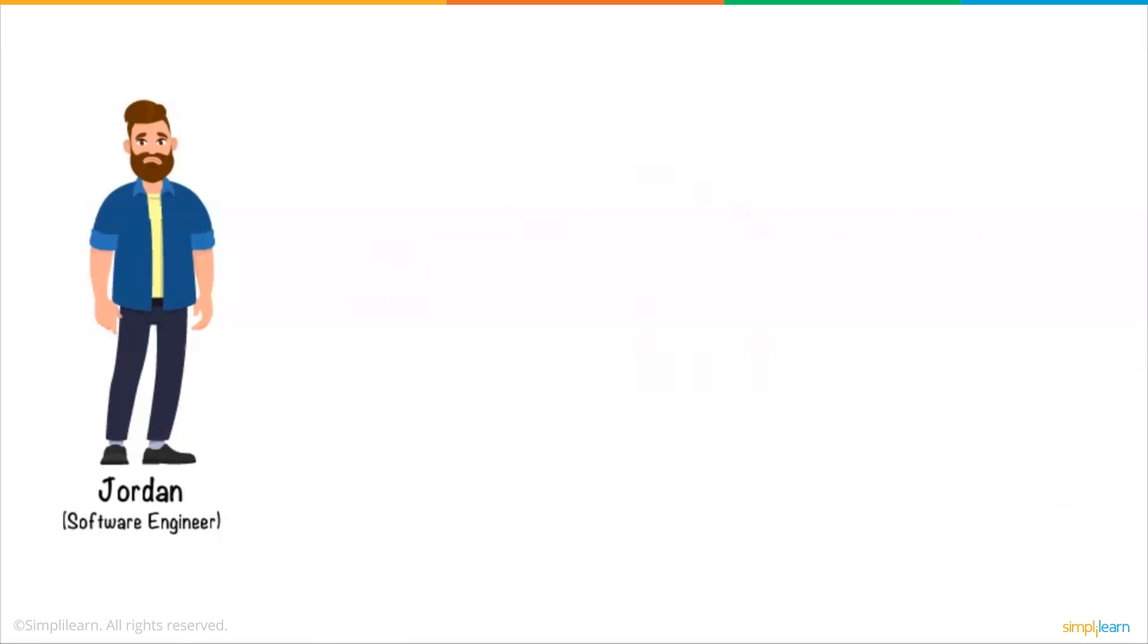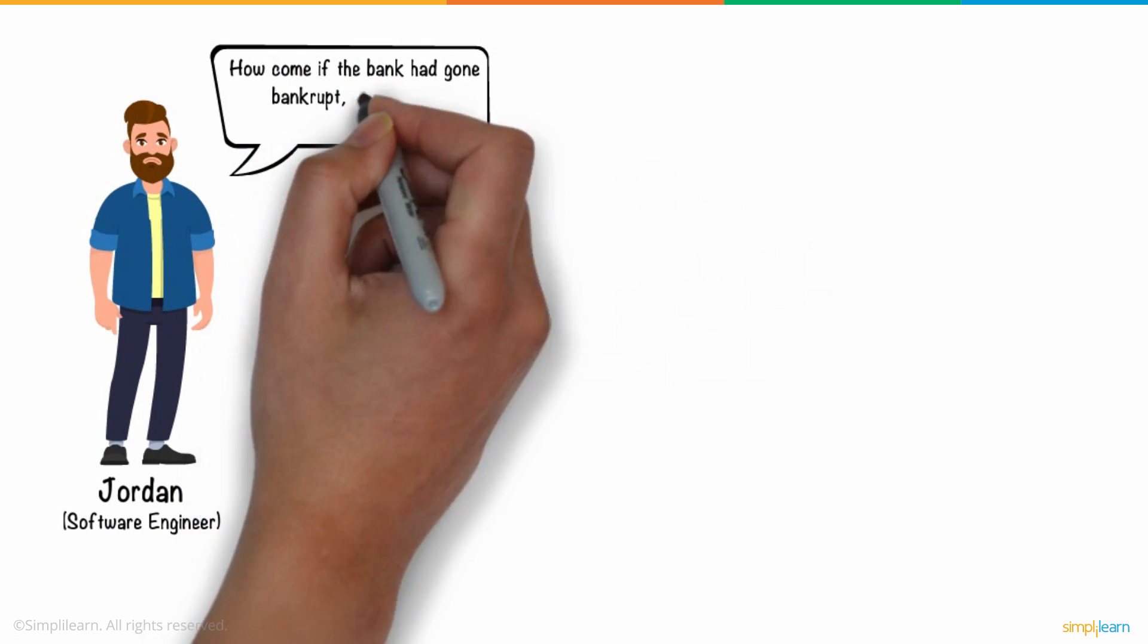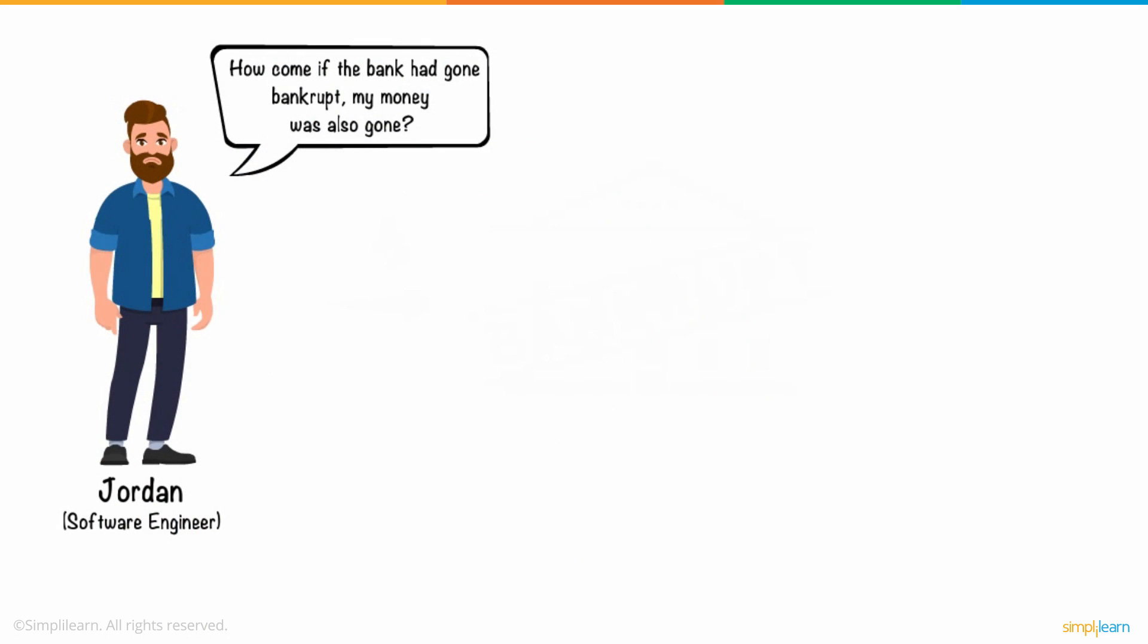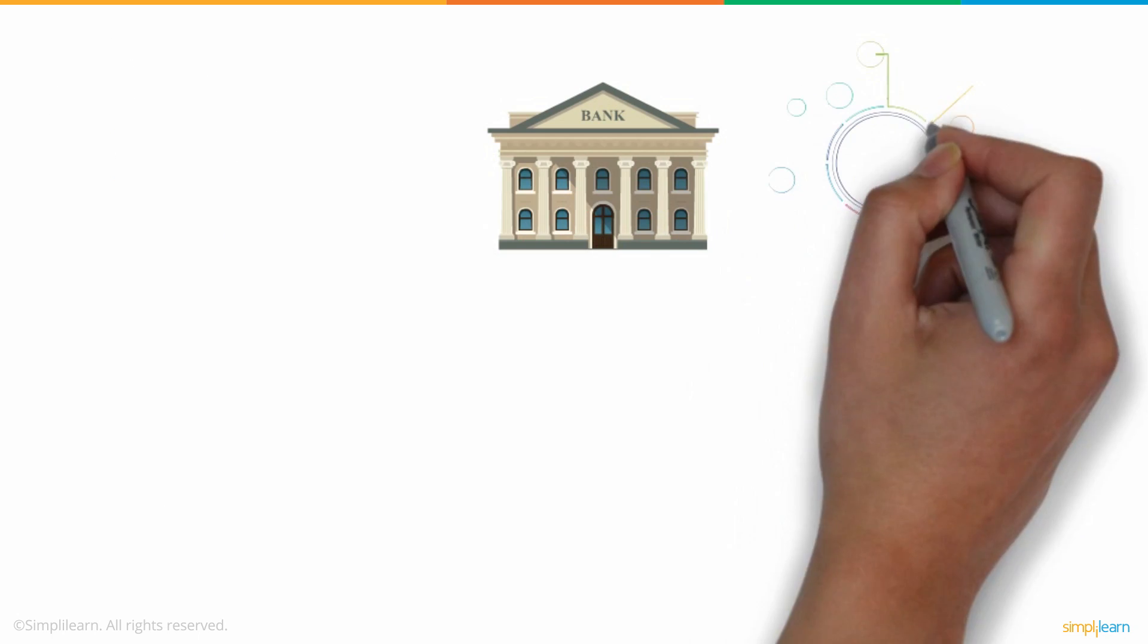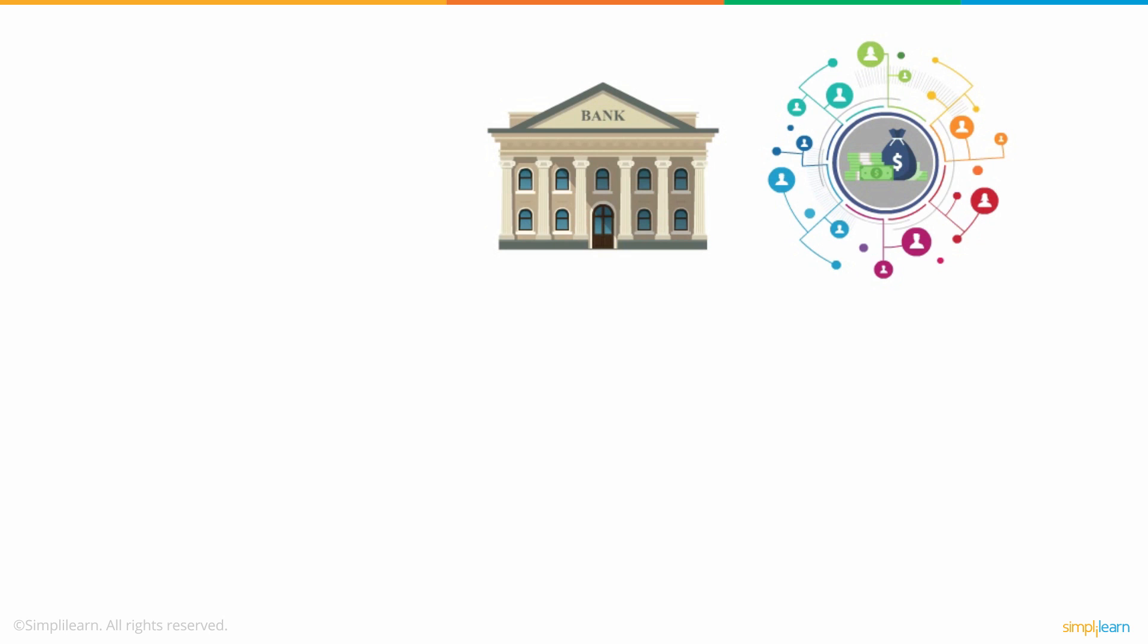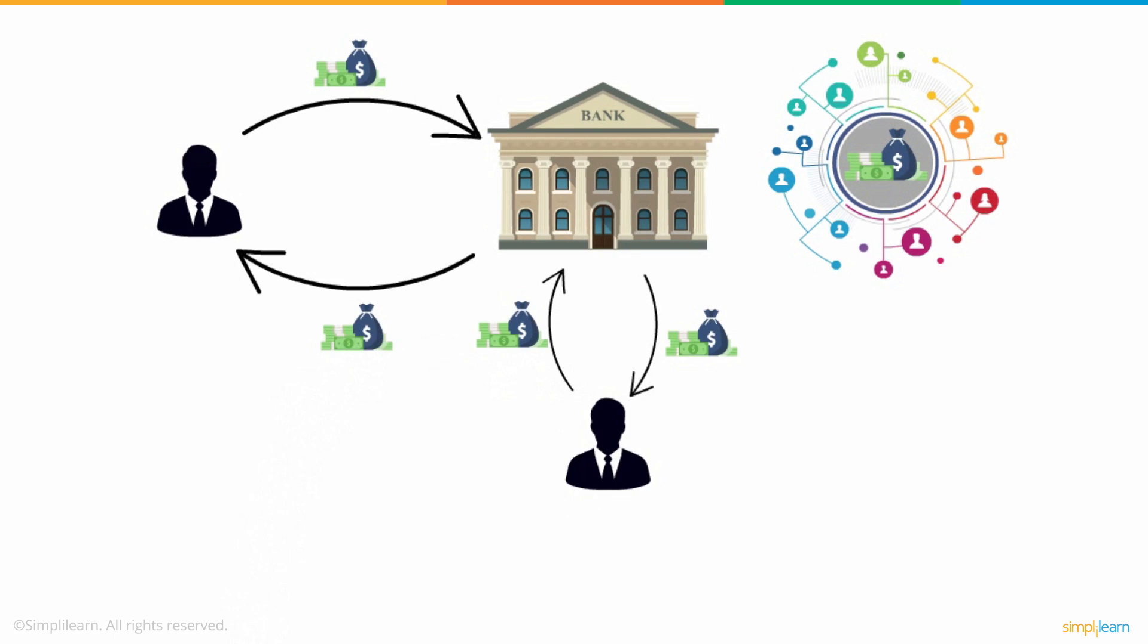Jordan was confused. How come if the bank had gone bankrupt, his money was also gone? When his friend Jack learned about this, he explained that banks are basically a centralized system for storing the data of all transactions. Banks rotate money to ensure the existence of the money of their customers.